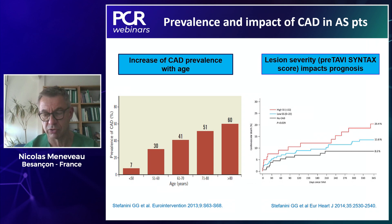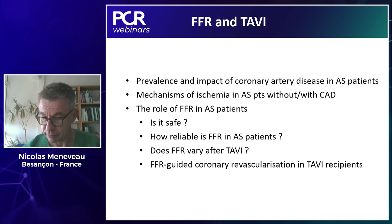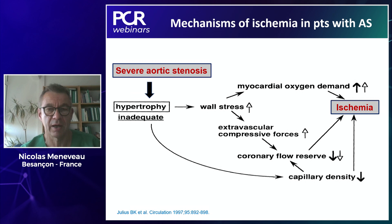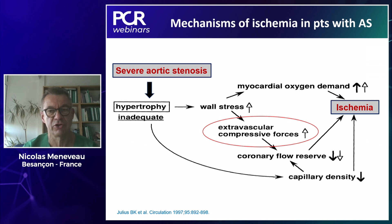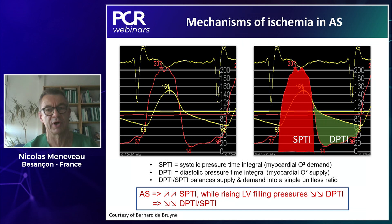Coronary artery disease is the most common comorbidity of aortic stenosis patients and has an increasing prevalence with age. The severity of CAD appears to be associated with impaired clinical outcomes in patients undergoing TAVI. In a cohort of 450 patients undergoing TAVI, those with a SYNTAX score higher than 22 received less complete revascularization and had a higher risk of cardiovascular death, MI, or stroke than patients without CAD or those with a lower SYNTAX score. There are several physiopathological mechanisms of myocardial ischemia in aortic stenosis, including increased wall stress leading to increased myocardial oxygen consumption, extravascular compressive forces, and coronary flow reserve reduction due to LV hypertrophy reducing capillary density.